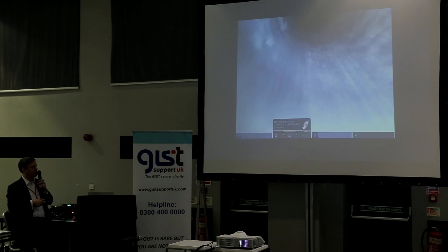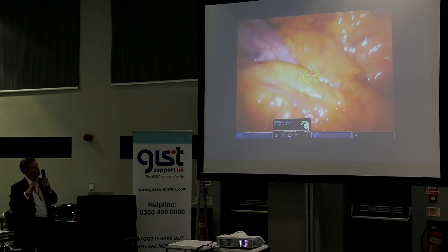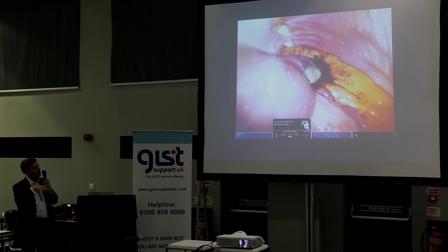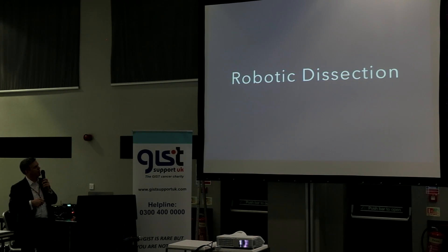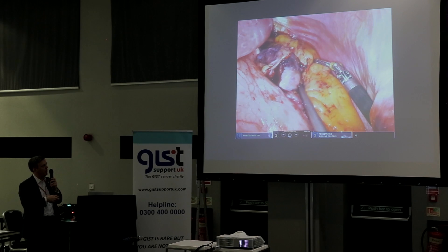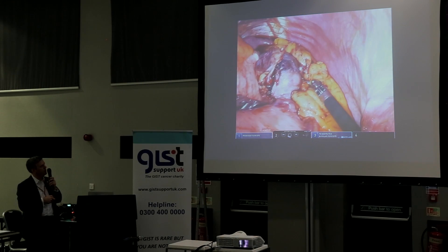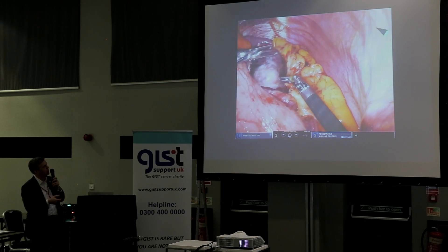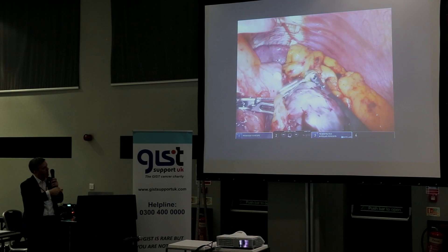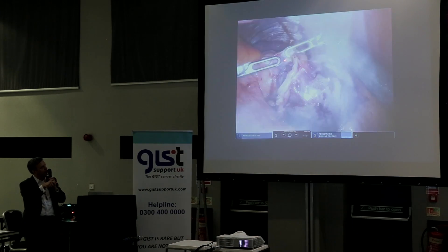We dissect all the way up to expose the tumour, and you can see adhesions from the tumour — smaller probably because of the imatinib — stuck onto fatty tissue. Here's the tumour. The next thing is to dock the robot: I put in the camera, then target it to where the tumour is, and this allows the robot to adjust its arms to put them in the right place to make the operation easier. When the robot is docked, my hand movements correspond directly to what happens with the robot instruments.